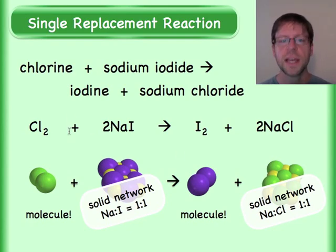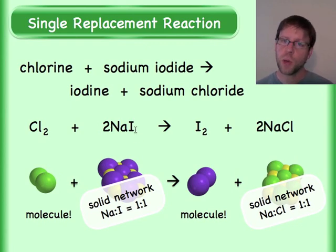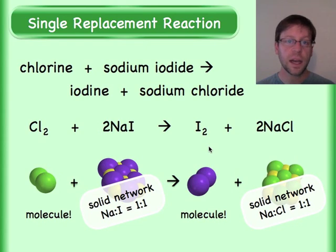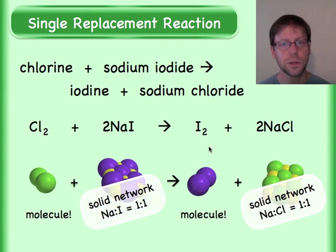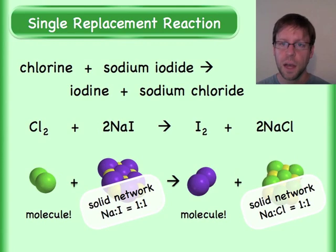I've got my chlorine gas — that's the element — and my ionic compound here contains an iodide. A swapping occurs: the iodide is going to become its individual element in its natural state, so that's I₂, and then we have NaCl — table salt — where the chlorine is now part of that ionic compound.